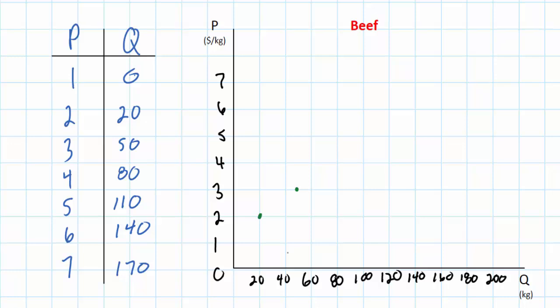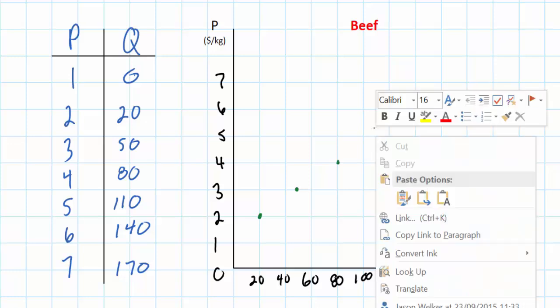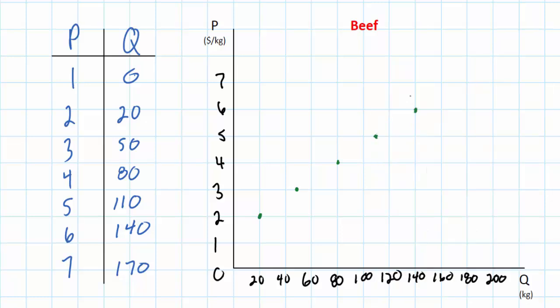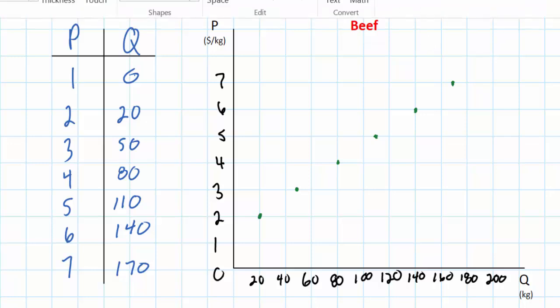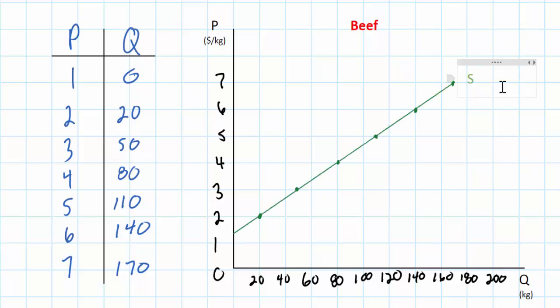I'll go ahead and plot the rest of the points from our supply schedule. With the points I have put on this graph, we can now draw our linear supply curve. We now have the supply of beef represented in both the table and on a graph. The question now is how can we derive a supply equation from the information in this table and from the line on this graph.